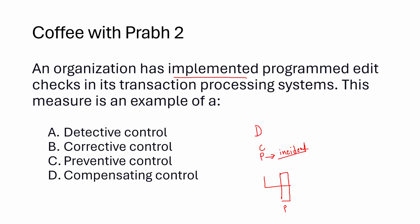Examples of preventive controls include firewalls and encryption — we install a firewall to ensure only authorized traffic gets through, like locking a door so no unauthorized person can access your house. If someone tries to break the lock, we want the action to be traced — that is detective control. Then calling the police to respond is corrective control. Going out wearing a mask is preventive; checking temperature for COVID symptoms is detective; isolating yourself from family to prevent further impact is corrective. A programmed edit check prevents you from editing invalid values — until you fill a required field, you cannot proceed to the next step.